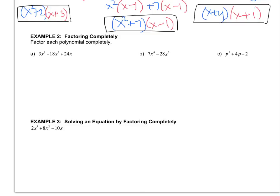So in that case, the first thing I want to check for in letter A is a GCF, and it's 3x. Remember, you look for constants and variables. So when I pull out 3x, I get x squared, then I would get minus 6x, and then plus 8. Now I have a trinomial, and I want to check for trinomial factoring.